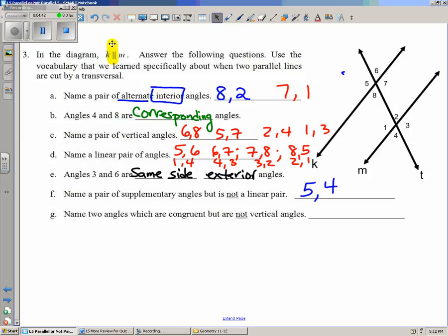One more. It says name two angles which are congruent but are not vertical angles. So if you look in part C, we named all the pairs of vertical angles, so we don't want to name any of those pairs.